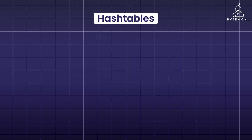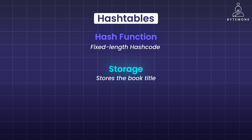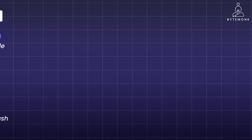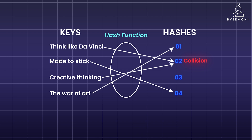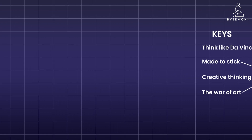Here is how a hash table works. A specific algorithm, or hash function, converts the book title into a fixed-length hash code. The hash table stores the book title and its corresponding hash together. When you need to find the book, the hash function is applied to the entered title, and the hash table uses the generated hash to quickly locate it. But what happens if two books have the same hash code by accident? This is called a collision — it's like two friends having the same nickname. Hash tables have mechanisms to handle collisions, but that's beyond the scope of this topic.